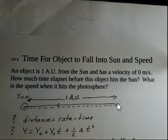So, secondly, as the object falls towards the Sun, could we use this kinematic equation that our position is our initial position plus our original velocity multiplied by time, plus one-half times acceleration times t squared? Can we use that?